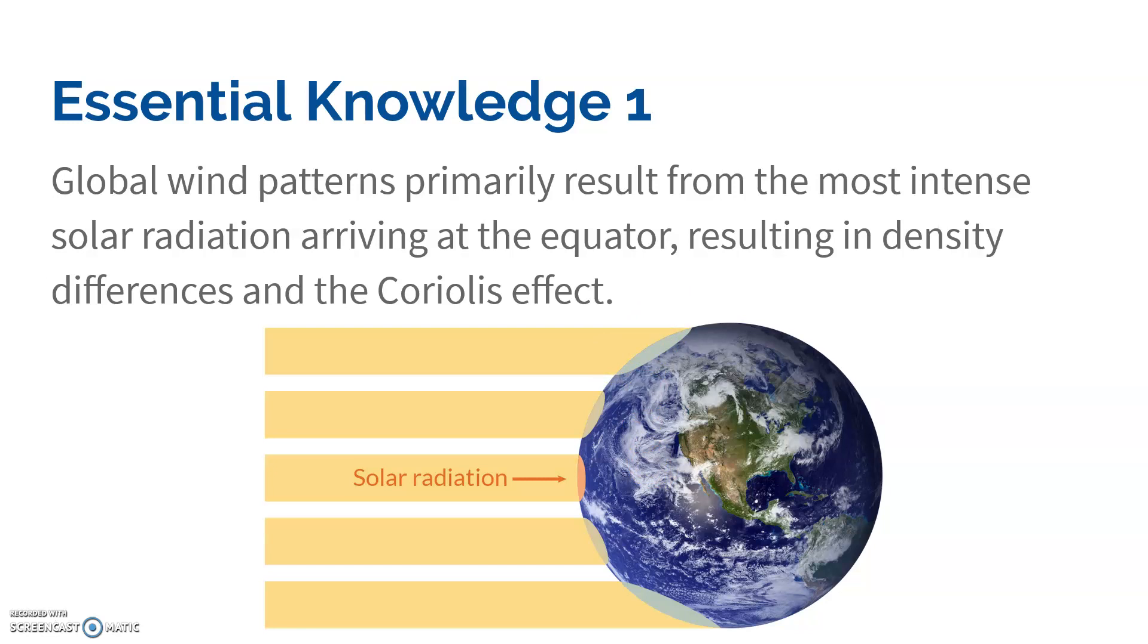You can actually test this out using a flashlight. If you shine a flashlight directly on your desk, you'll see that it's a really bright white light. But then if you turn the flashlight sideways, it's more spread out. It's the same amount of solar radiation, but the direction affects how intense it is.